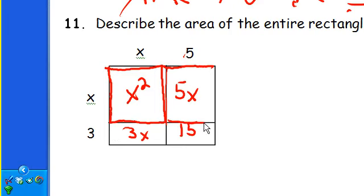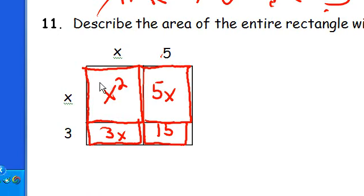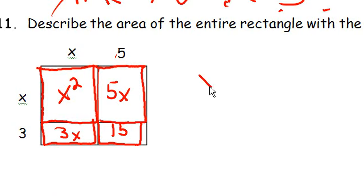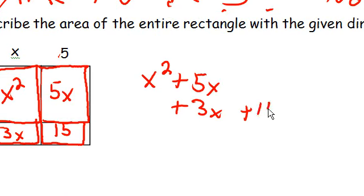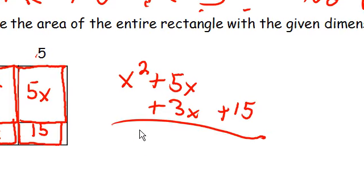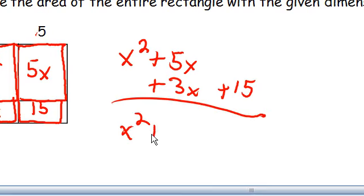So what we can do is we can go through here individually and we can find the area of every single little box. And so there's the area of every single little box. So the total area will be the sum of all of these boxes. So that would be x squared plus 5x plus 3x plus 15. Go ahead and add down. We'll get x squared. Add our like terms. Plus 8x plus 15.